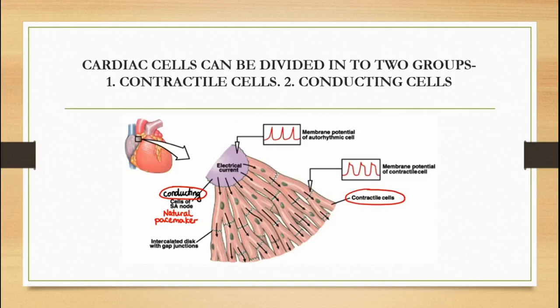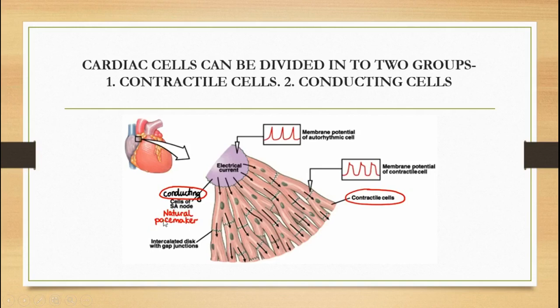Cardiac cells can be divided into two groups: contractile cells and conducting cells. Contractile cells are responsible for the force of contraction — the pumping action of the heart. Conducting cells are responsible for the automaticity of the heart — they generate the electrical impulse. The SA node and AV node are known as conductors because they can generate electrical impulses on their own. The SA node fires at a high frequency of 70 beats per minute, so we call it the pacemaker, while the AV node is called the latent pacemaker.